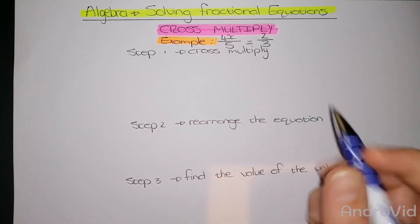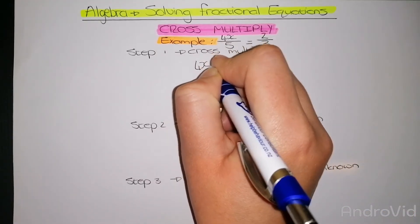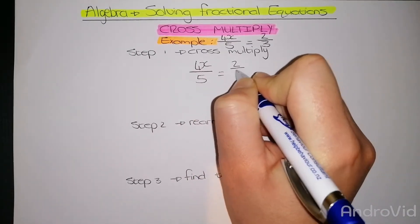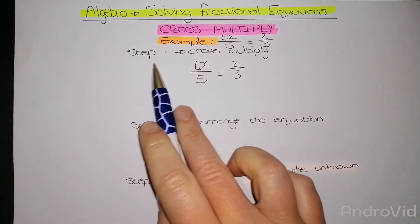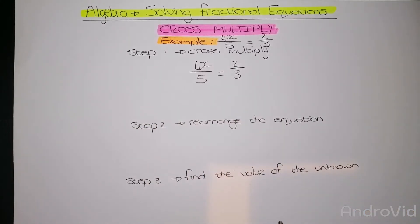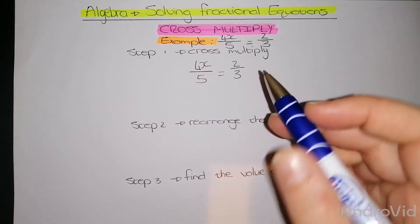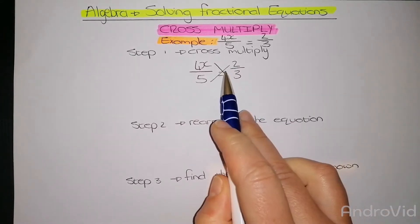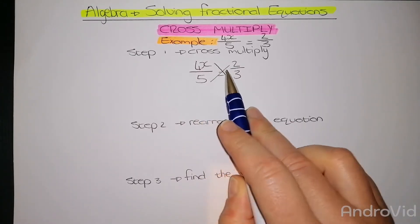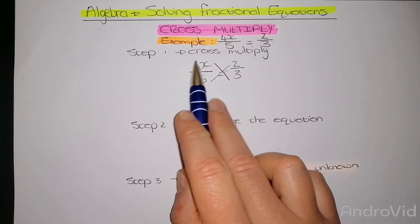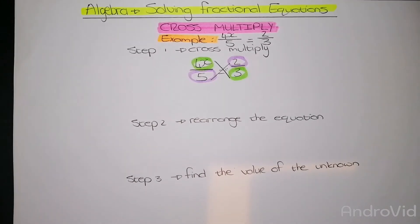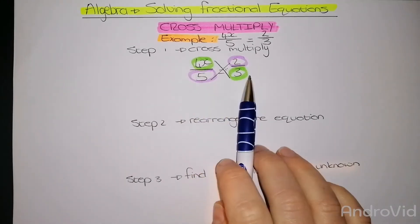First, I'm going to rewrite my equation: 4x over 5 equals 2 over 3. Step one is to cross-multiply. What is meant by cross-multiply is I am going to draw a big multiplication symbol over my equal sign, and now I need to cross-multiply from the top of this line to the bottom of this line, and the same on the other side.